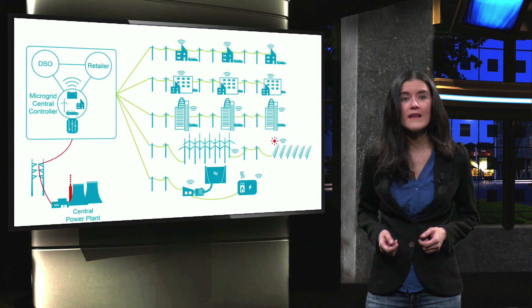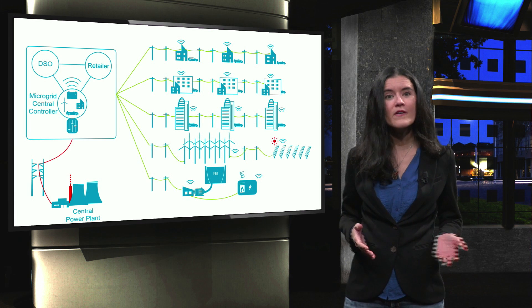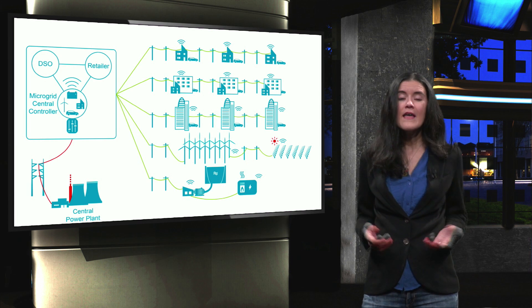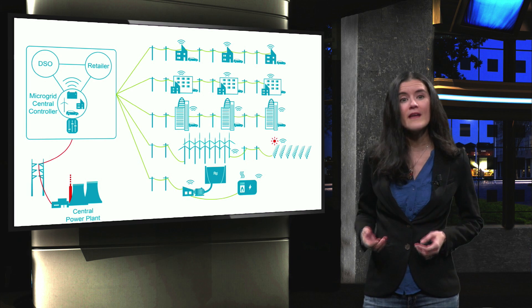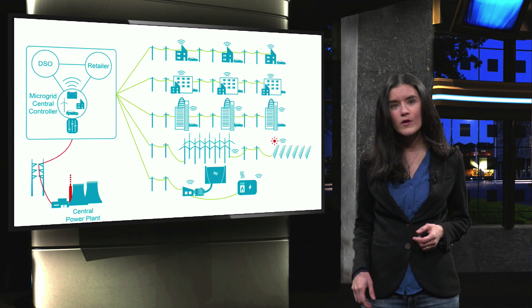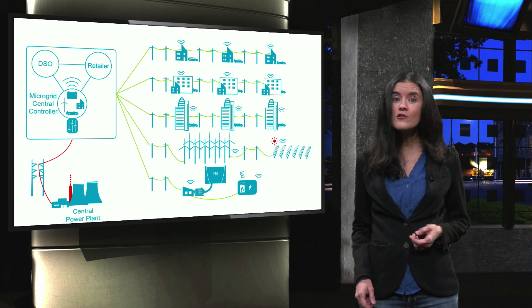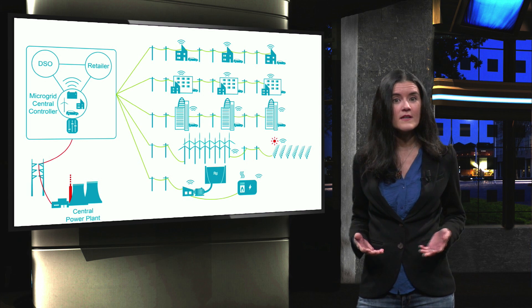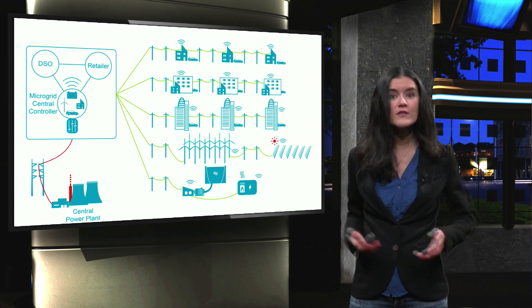We have already seen, in a centralized approach, a microgrid features a microgrid central controller that is responsible for monitoring and actively making decisions within the network. We also saw that local control is responsible for the physical setting of the power converters, generators and loads in the microgrid.